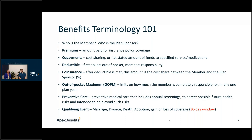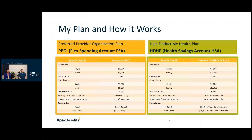Today we'll talk about two different plans: a Preferred Provider Organization plan, or PPO, and a High Deductible Health Plan, or HDHP. A PPO is usually paired with a Flex Spending Account or FSA, and the HDHP is paired with an HSA, or Health Savings Account. Let's dive into the deductible first — for the PPO it's $1,500 and for the HDHP it's $3,500.